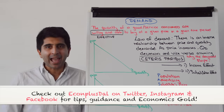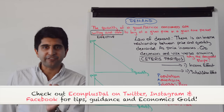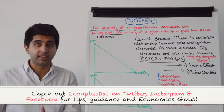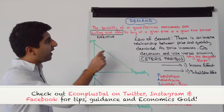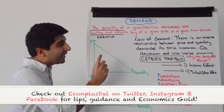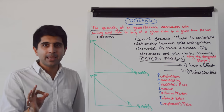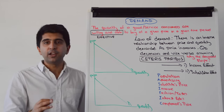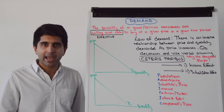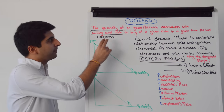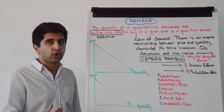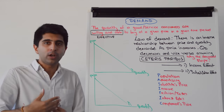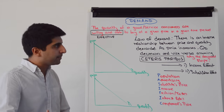Demand has to be effective in economics for it to exist. By effective, consumers have to be both willing and able to buy something for there to be demand in economics. Demand has to be effective — consumers are willing and able.